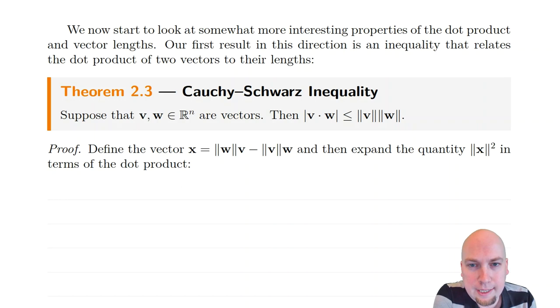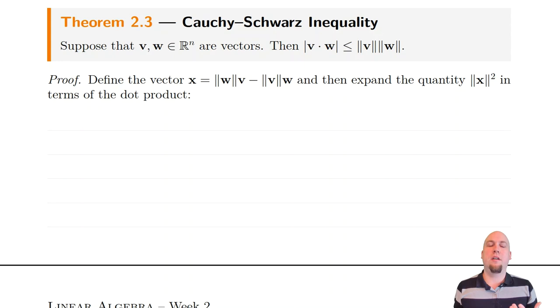This is not obvious. We sort of alluded to this when we talked about the geometric interpretation of the dot product, but this theorem is still not obvious. And where it comes from is also not obvious. So this proof is going to be our first not-obvious proof.